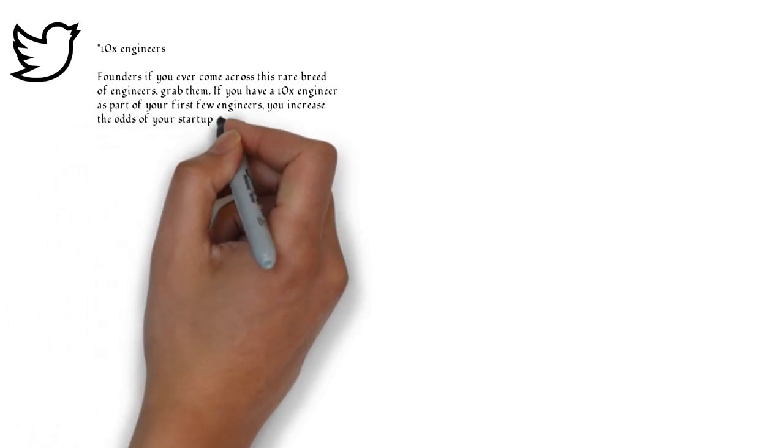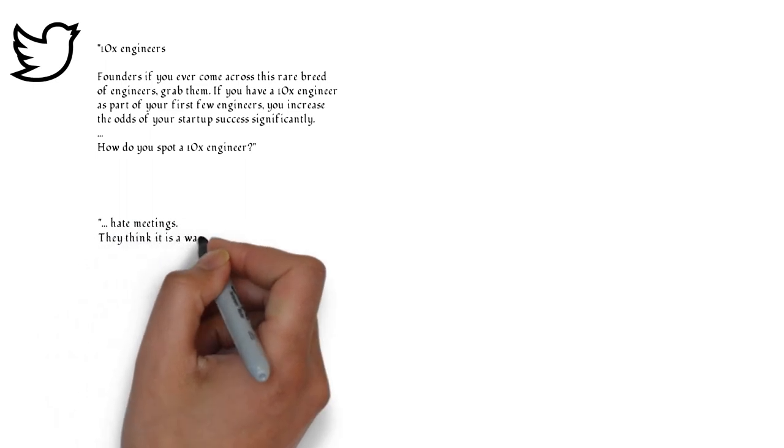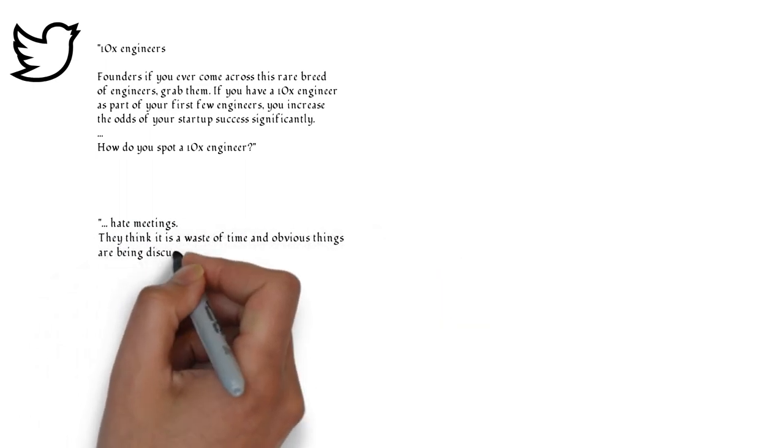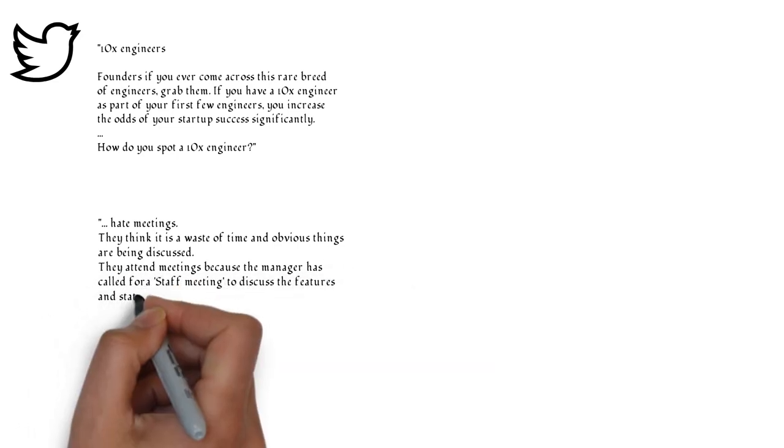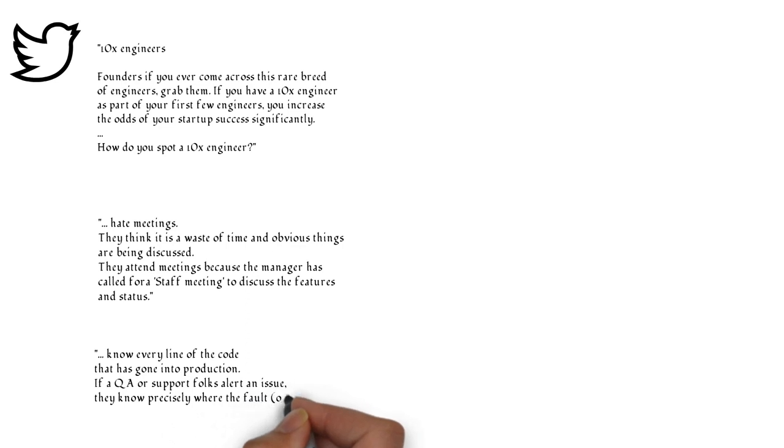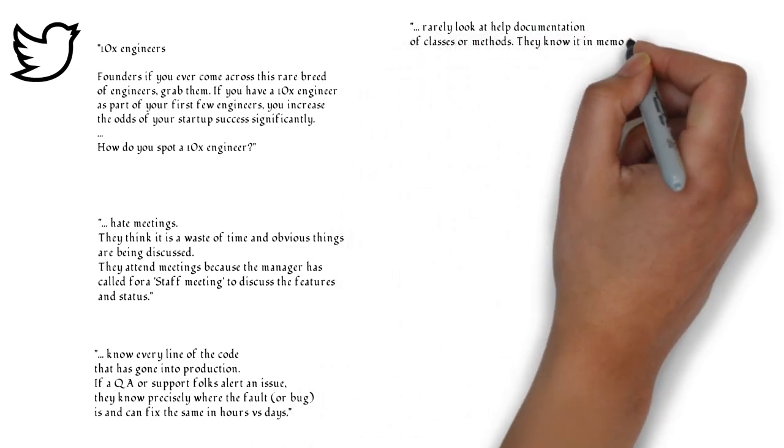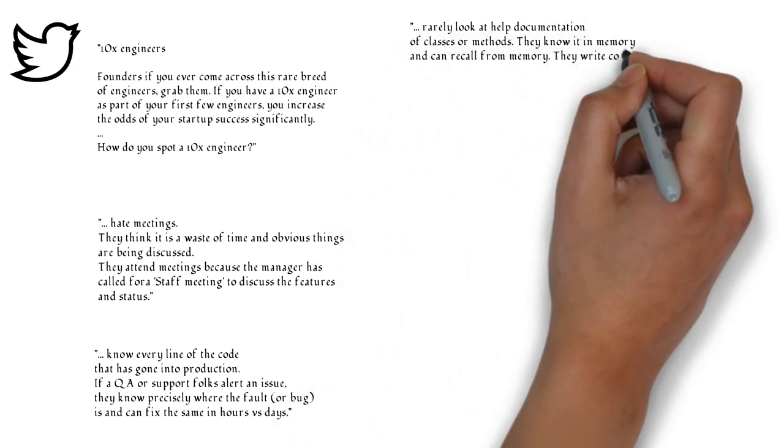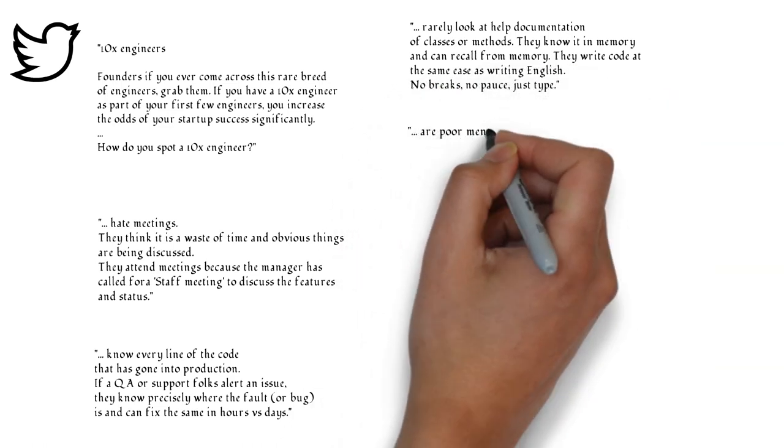A month ago, a thread about such a real programmer, or in this case it was called a 10x engineer, made rounds on Twitter. According to the author, a 10x engineer is someone who keeps all the codebase in his head, prefers to work alone, doesn't like meetings, doesn't like mentoring, thinks that teamwork is a waste of time, and so on. The author was a manager and he didn't mean to be sarcastic. He appreciated these traits in a programmer. In his opinions, such a person was a cornerstone of a project.